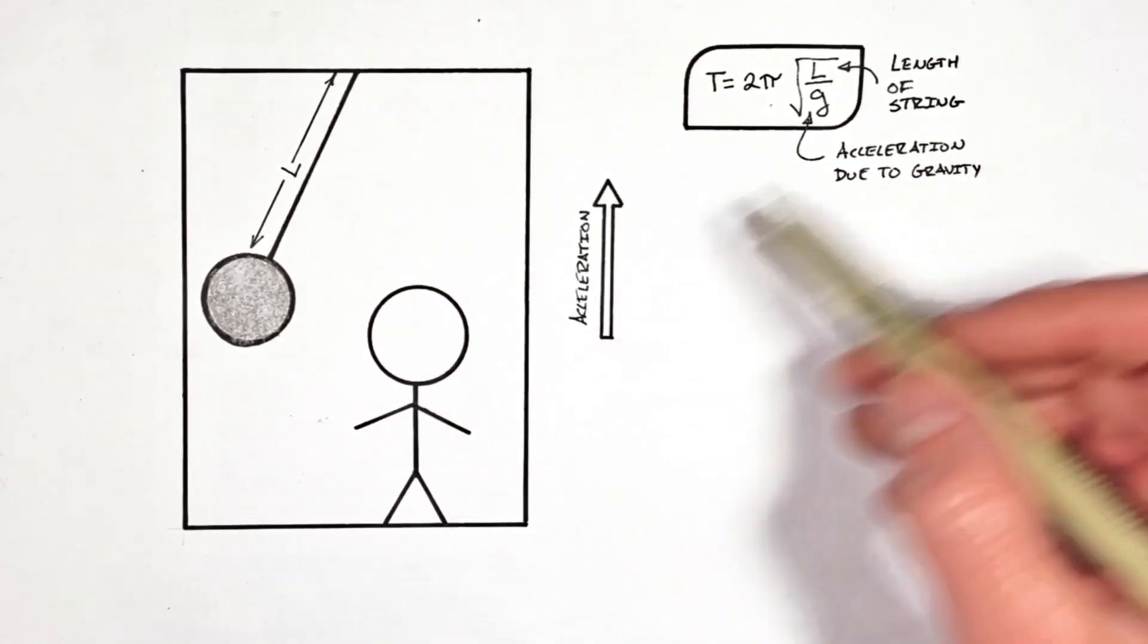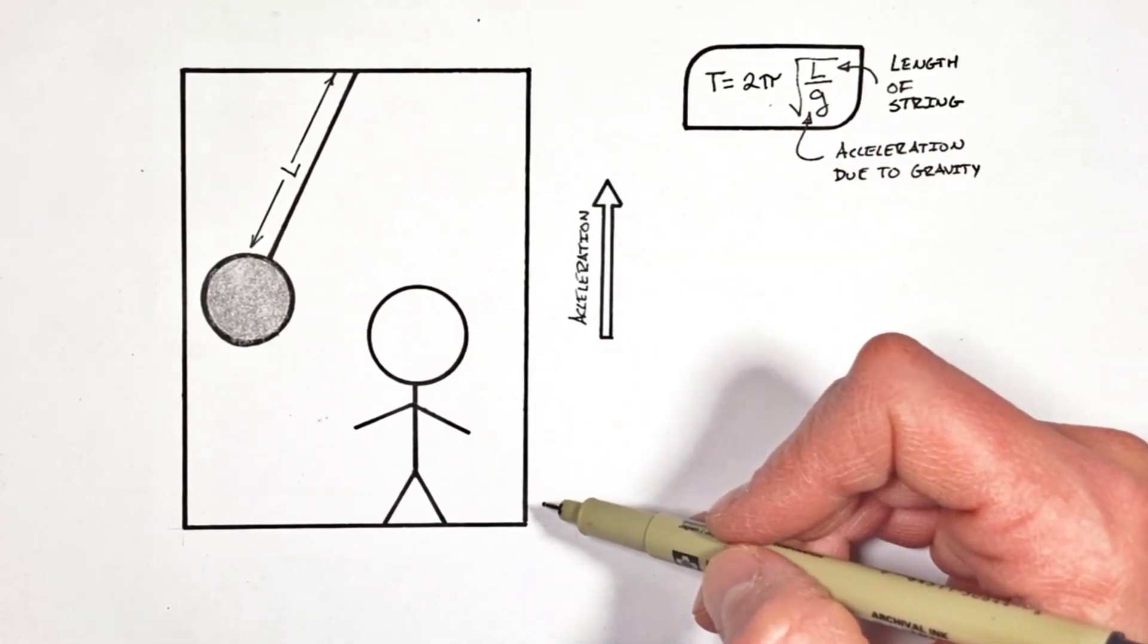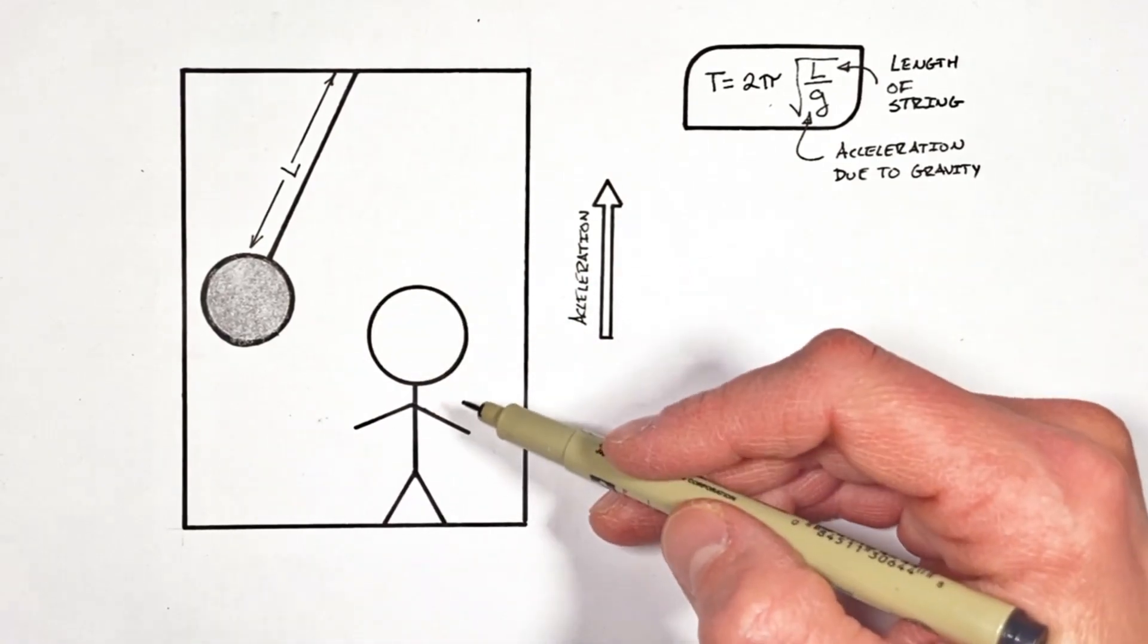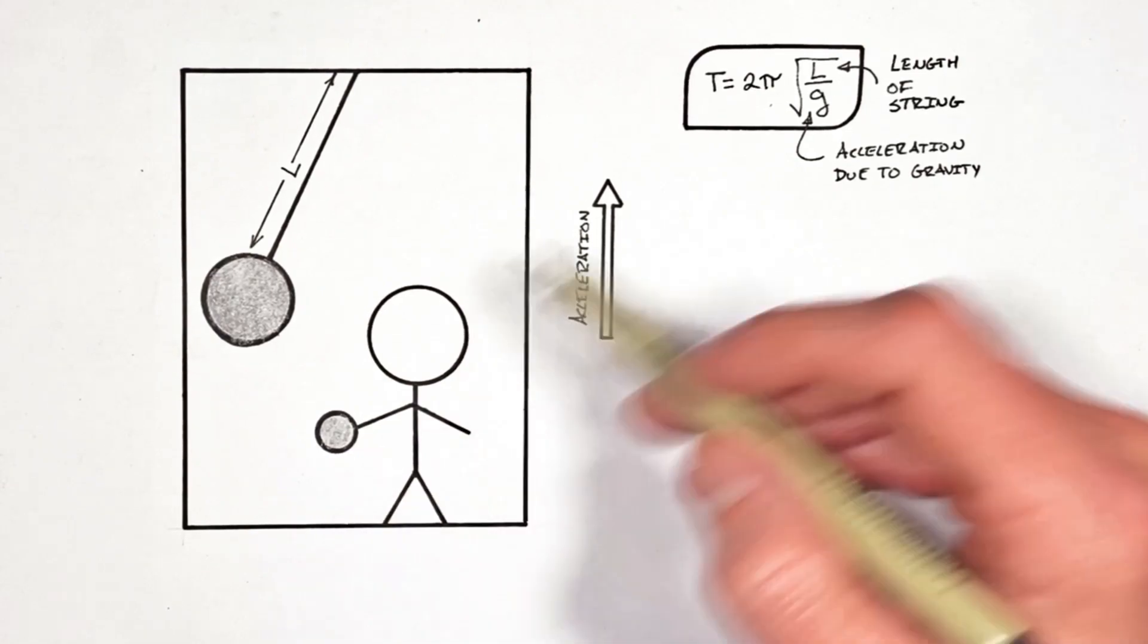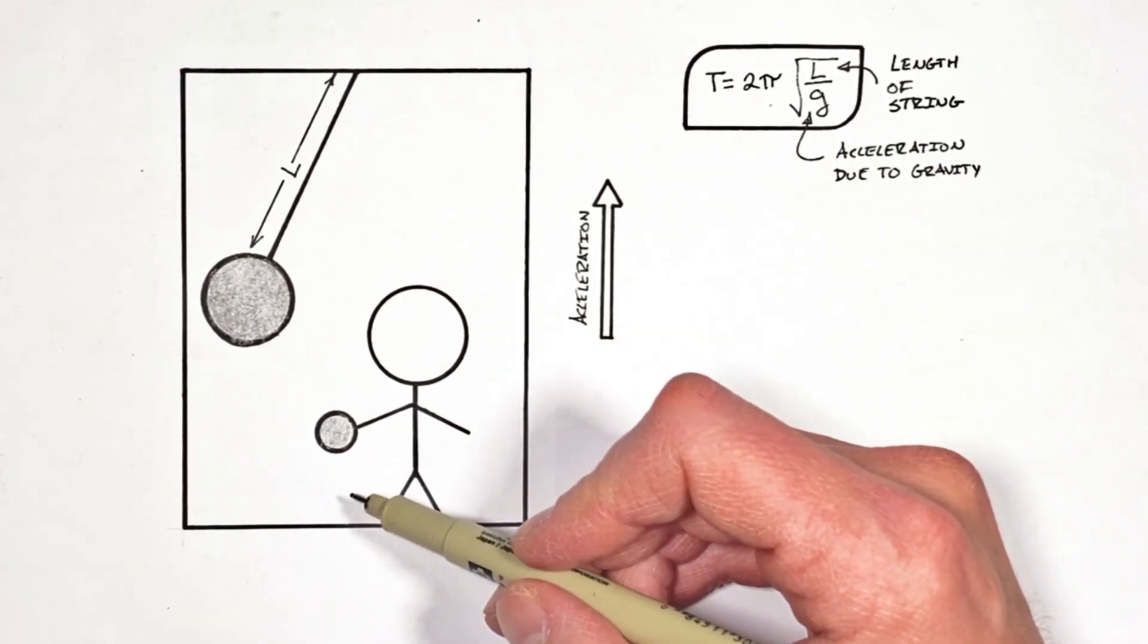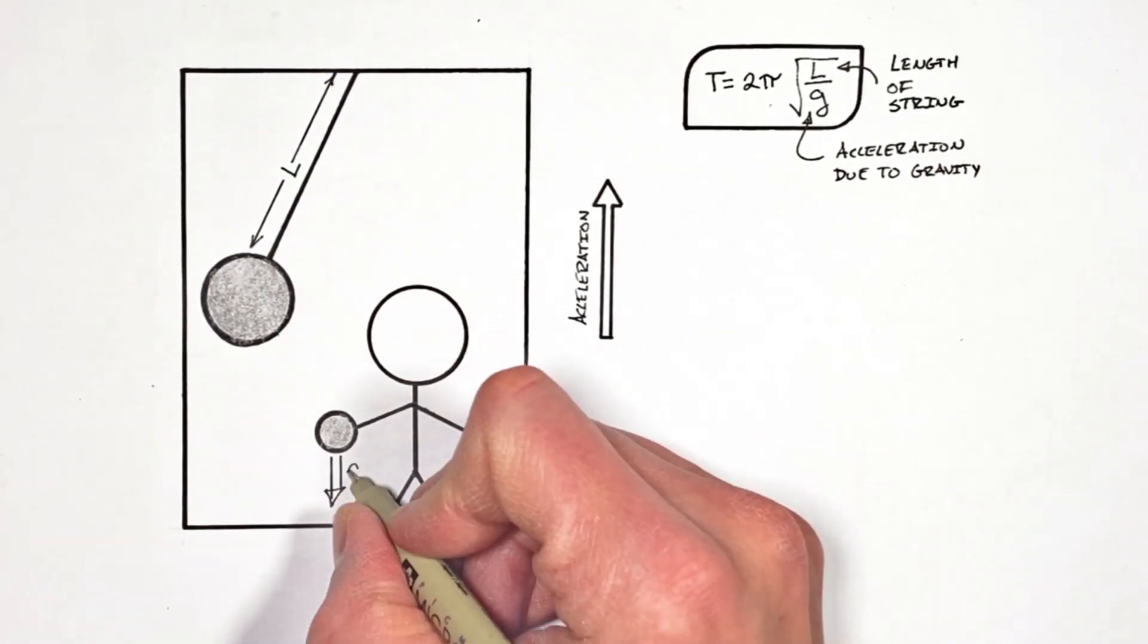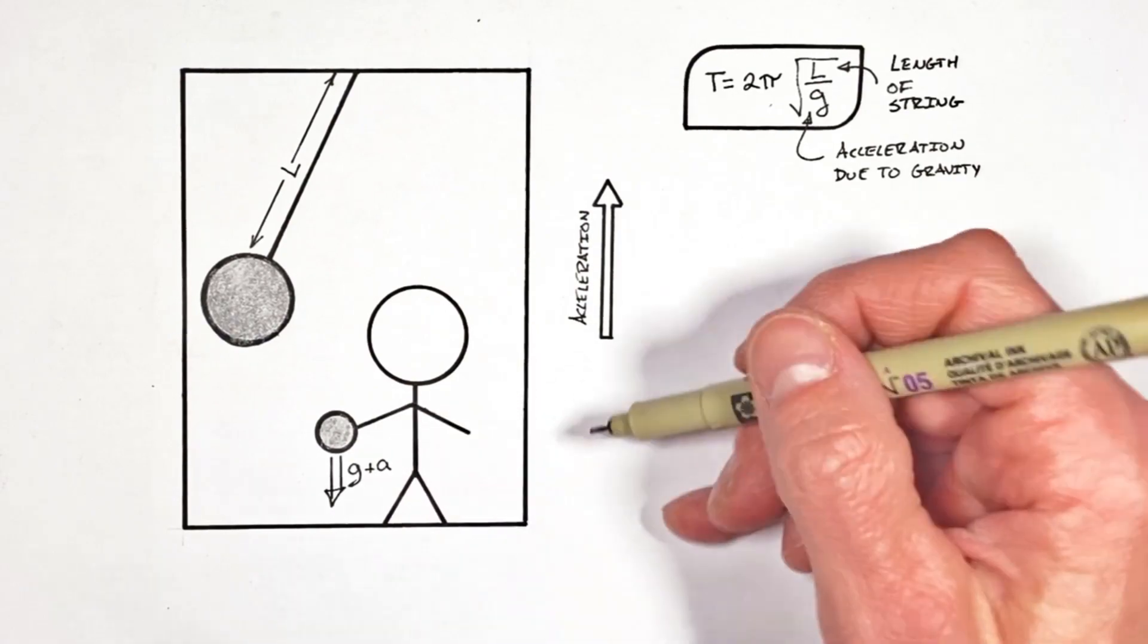You see, this person, they wouldn't think the acceleration due to gravity was g or 9.81. They would actually think it was more. I mean, if this person was to take and drop a ball, they wouldn't see that ball accelerate downward at g or 9.81 meters per second squared. This ball would actually accelerate downward at g plus whatever the rate of acceleration, I'm going to call that A, of the elevator.